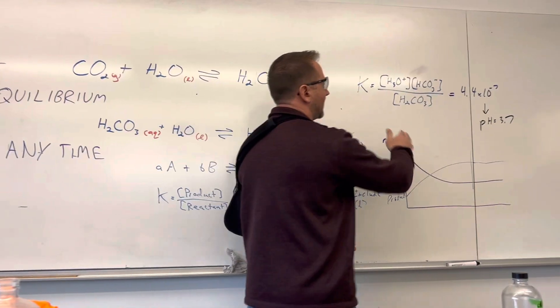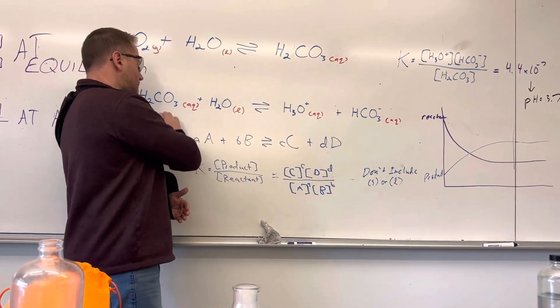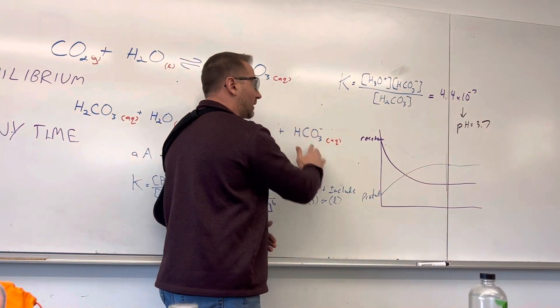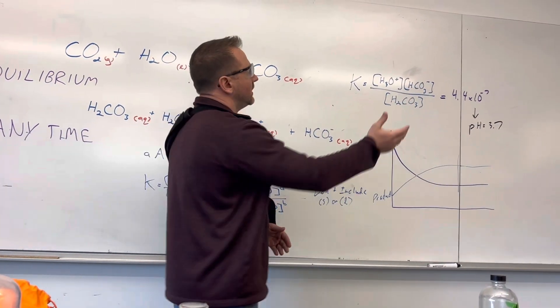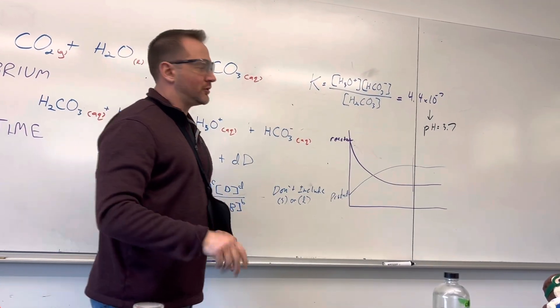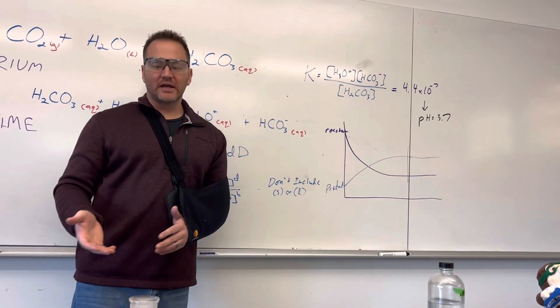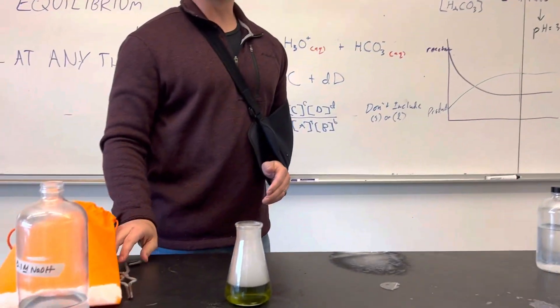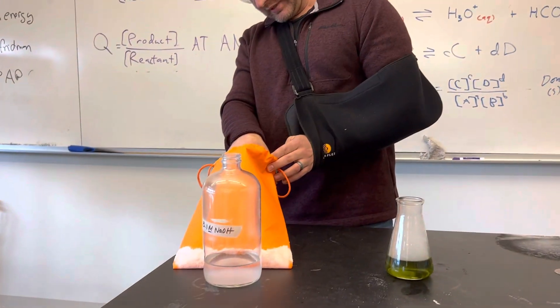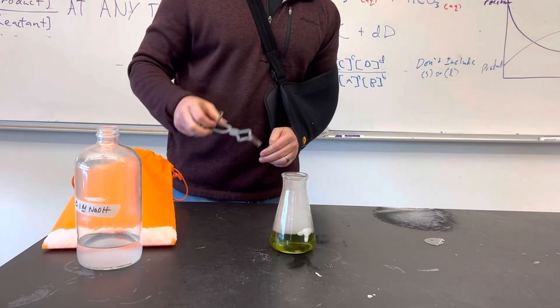So for carbonic acid, the K expression—because water is a pure liquid we leave that out—but carbonic acid, hydronium ion, and the bicarbonate ion are all aqueous, so they're in phase, so we can include them in the equilibrium expression. This would be a Ka value, but we'll talk about that in the acid-base unit. And essentially, you don't need to do any math here, but it gives us a pH of around 3.7. So we can see that it's pretty acidic; the universal indicator turns yellowish-green when it's in acidic conditions of that pH.